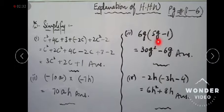6 × 5 = 30, so 30g². Then 6g is again multiplying with -1, giving -6g. Both variables are different—this is square and this is single—so this is the answer. In number 4, -2h is multiplying with the bracket.